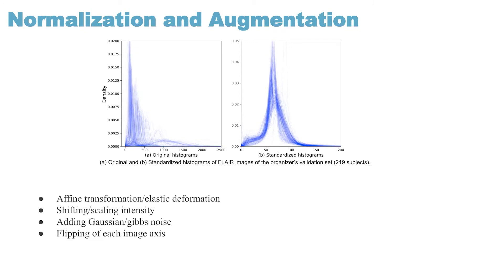Augmentation is a very essential step while training a deep learning pipeline. We employed several augmentations such as fine deformation, elastic deformation, shifting and scaling intensity values, adding noise such as Gaussian and MRI-specific Gibbs noise, and flipping image axes individually. These transforms are applied during training on the fly.